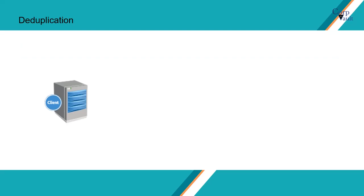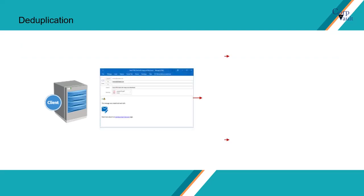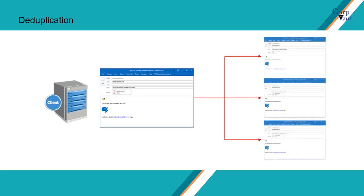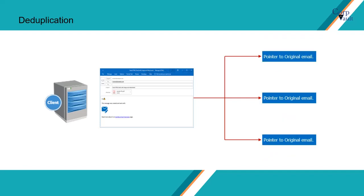Let's take an example. Consider this email has been sent to your team of 4 people. Instead of storing 4 copies of this email, a DeDuplication-enabled email system backup will only store a single copy of the email, and have pointers to the saved copy for any subsequent backup of the same email.